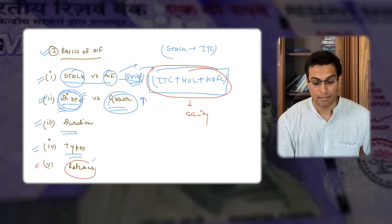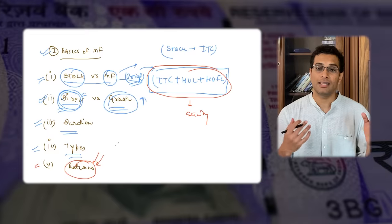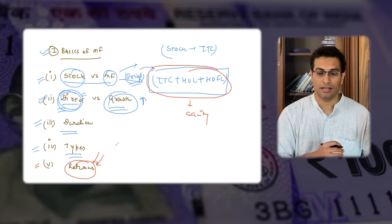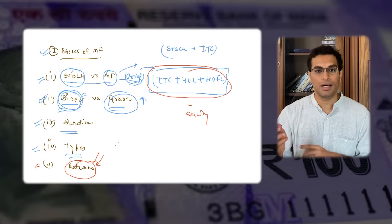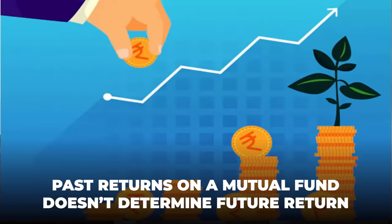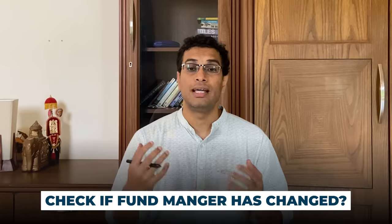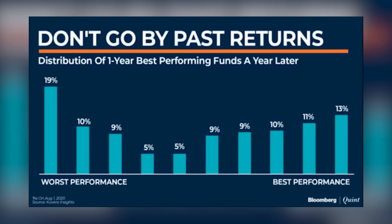Fifth and finally, people get swayed by the returns of a mutual fund — for example, last year this fund gave 25% return, so this year it will also give similar returns. No. The past historic return of a mutual fund is no guarantee that it will perform in the future. Yes, the positive part is that maybe the fund manager is good, and if the fund manager has not been changed, it gives you more hope. But please do not look at the fact that last three years CAGR has been this and therefore continue to invest. There is a very small correlation between past performance and future performance.